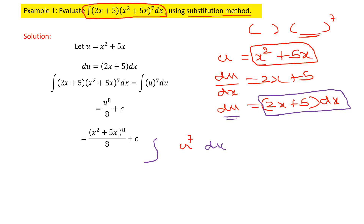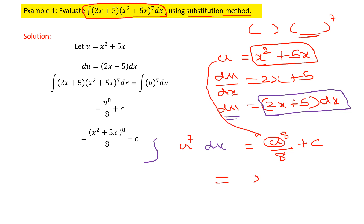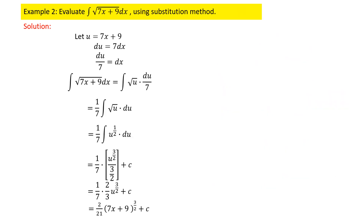Integrating u⁷ gives u⁸/8 + C. In the last step, we replace u with x² + 5x, giving the final answer (x² + 5x)⁸ / 8 + C. Remember, always express the final answer in terms of x, not u, since u was only a substituted variable.